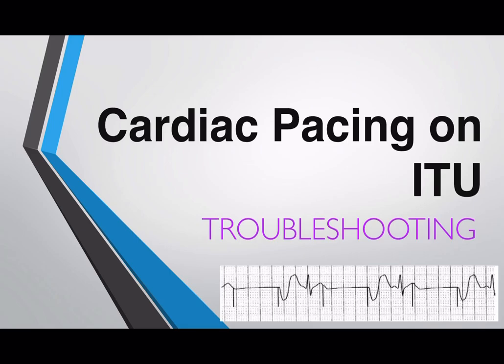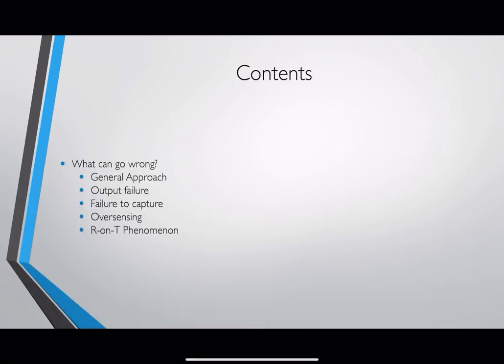Welcome to another EdgyMed video. In this video we'll be talking about troubleshooting cardiac pacing on intensive care. We'll specifically be focusing on transvenous temporary pacing, as it's probably the most common type of pacing that we do on intensive care for the symptomatically bradycardic patient who's acutely presented. We'll go through a little bit about what can go wrong — the general approach to a patient who's got a pacing box that's not working.